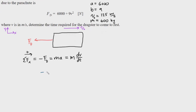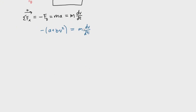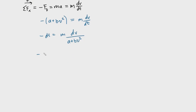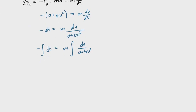Substituting Fd = a + bv², we get: -(a + bv²) = m·dv/dt. We separate variables by moving dt to one side and the velocity terms to the other, giving: -dt = m·dv / (a + bv²). Taking the integral of both sides sets up the integral we need to evaluate.